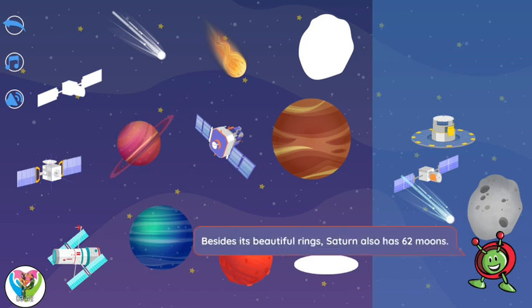Besides its beautiful rings, Saturn also has 62 moons.